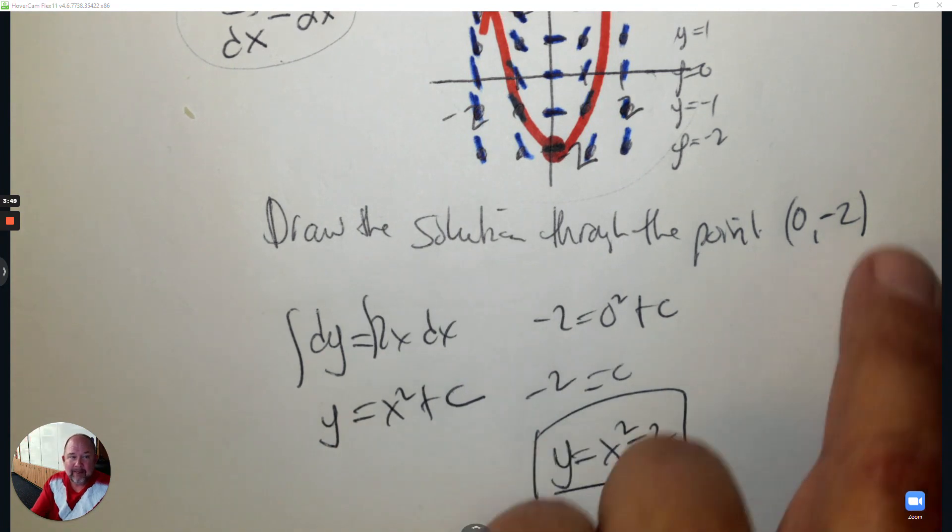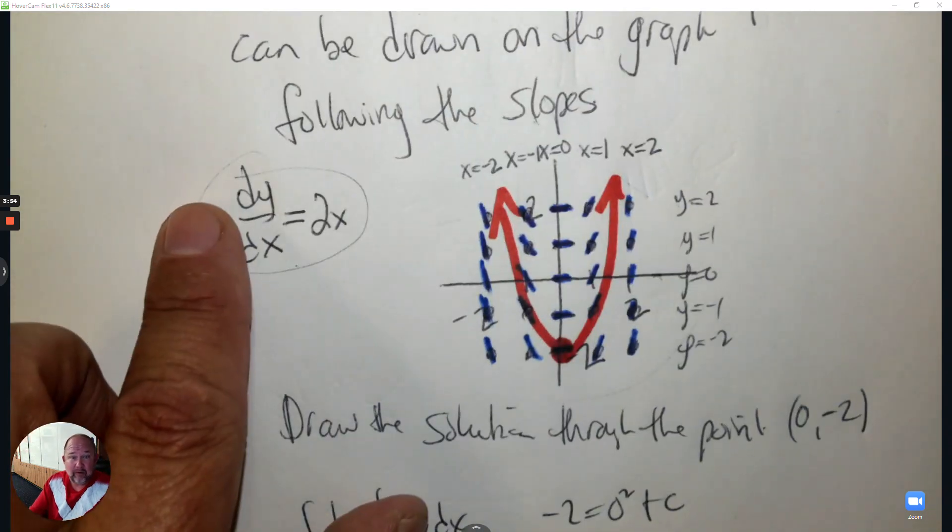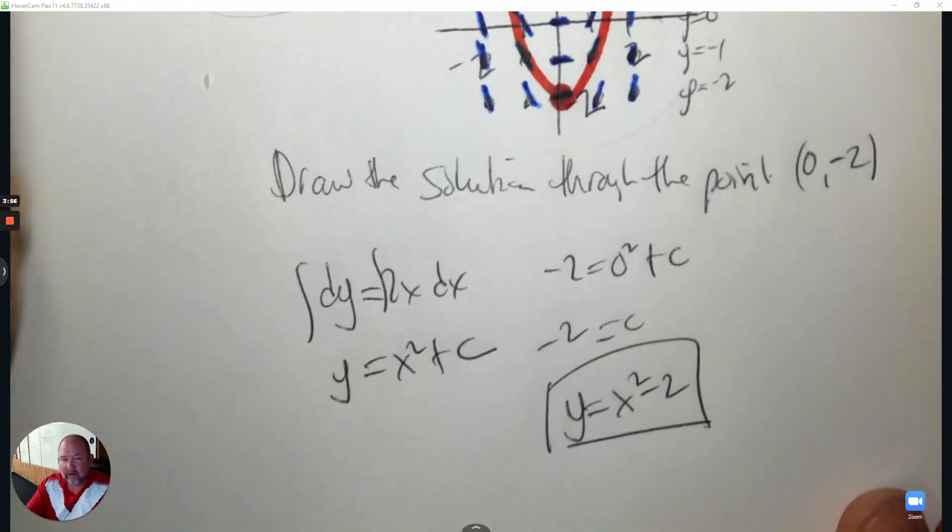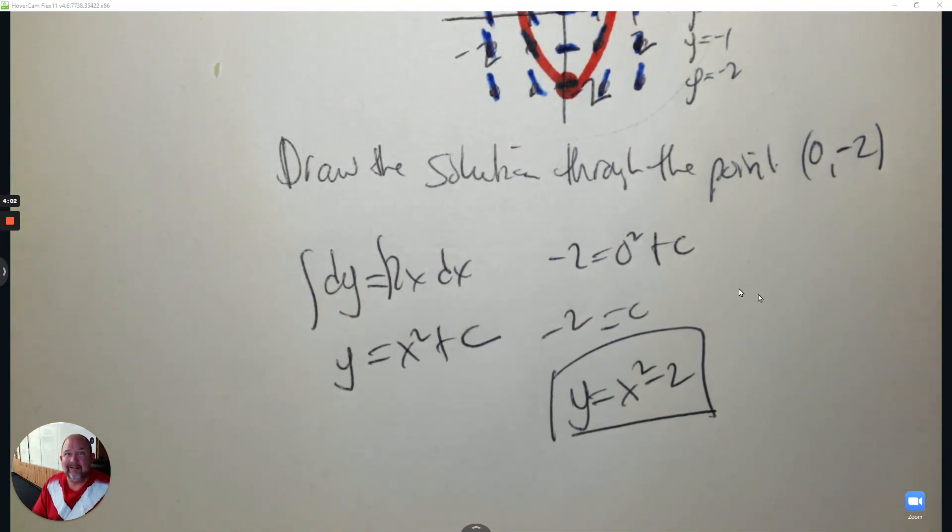Solved for y, plugged in 0 and negative 2, and I did it both ways. So you can solve a differential equation with a slope field, and you can solve it by separating, integrating, and solving for y.